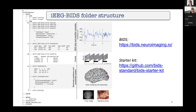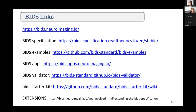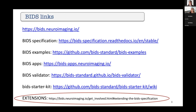If you want to learn more about BIDS, the BIDS website has a lot of information, and there's a starter kit if you want to start organizing your data. The one I would like to point out primarily is also the extensions — if something in BIDS doesn't fit your data yet, or you have a new data type, you can propose an extension. The community is generally very supportive of helping people extend BIDS, such that we can all start collaborating and sharing data more easily.